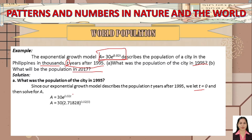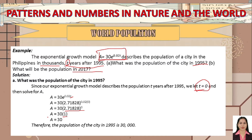Substituting Euler's constant e ≈ 2.71828 and t = 0: we get 0.02 × 0 = 0, and any number raised to 0 equals 1. So 2.71828^0 = 1. Therefore A = 30 × 1 = 30.